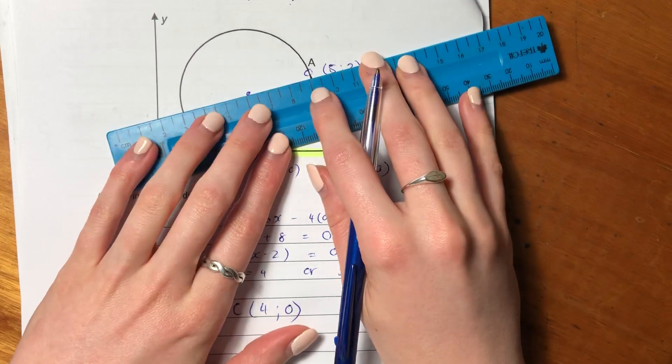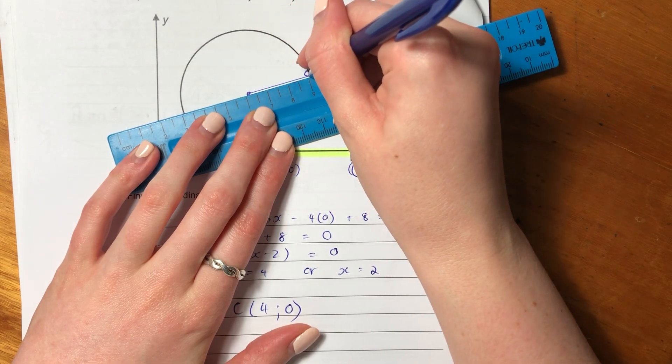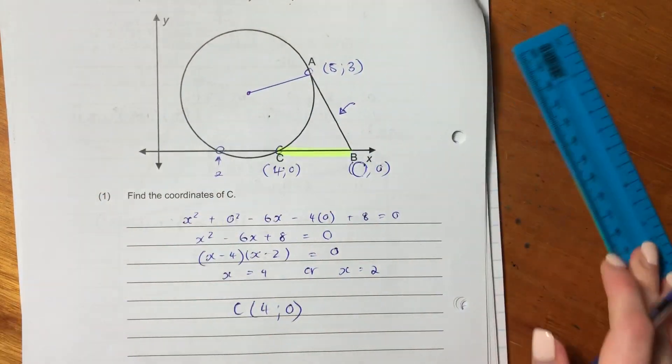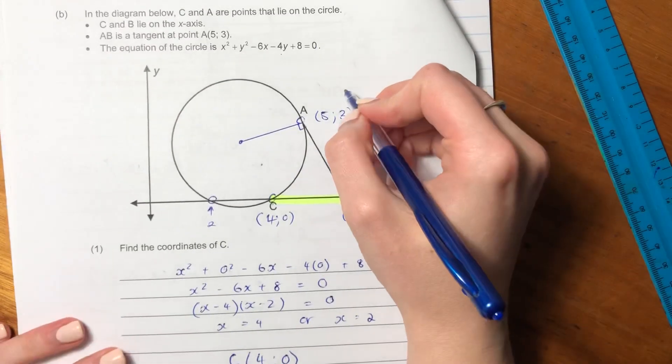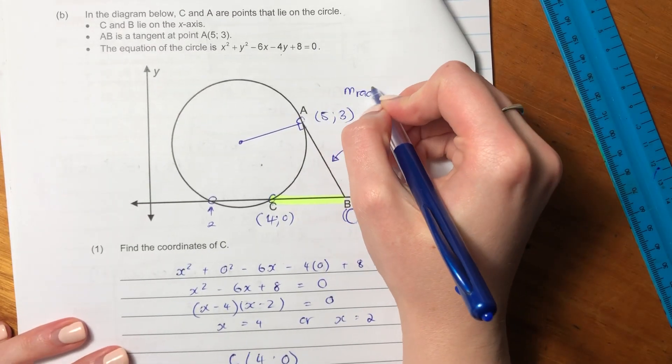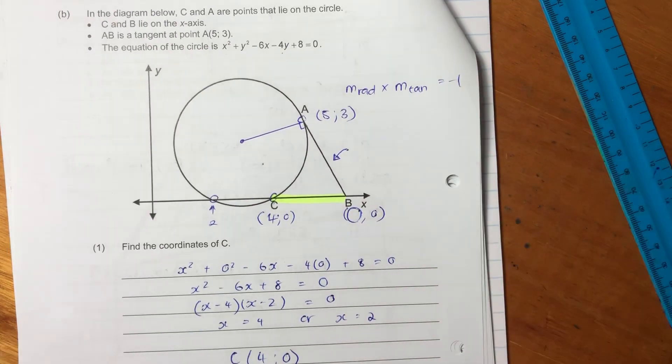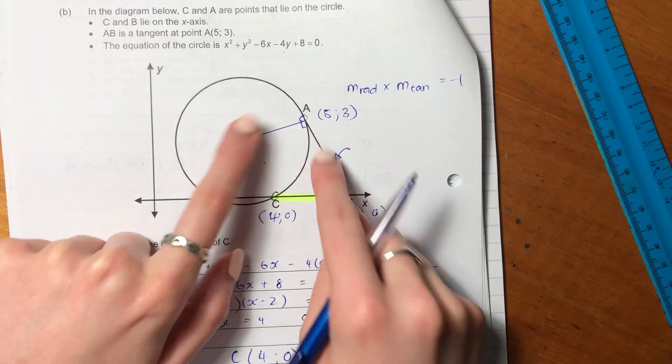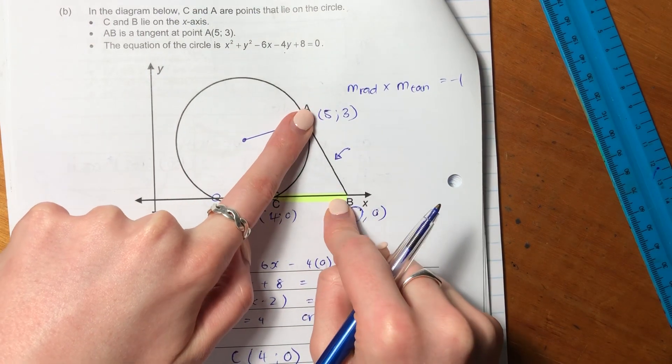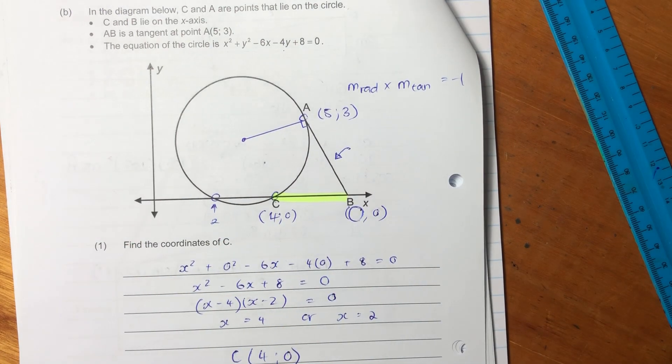But to get the equation of that line, we kind of need the gradient. But what we could do is we could find, remember, if we have a tangent and we draw a radius to that tangent, then we know firstly that this is 90 degrees, but we know that the gradient of the radius times by the gradient of the tangent has to equal negative one.